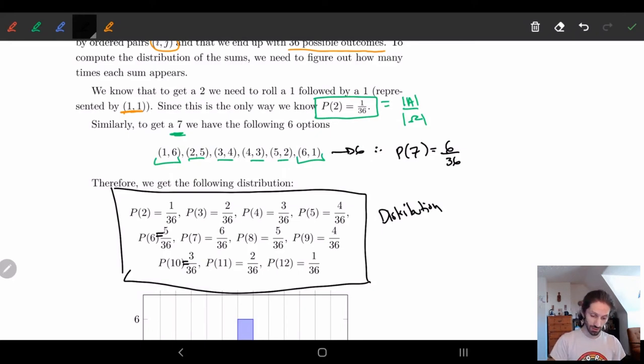Another way to do this is you don't have to list them one by one, you can also do them by a function. So I could say that P of i is equal to, and I'll have two different things. I'll either have i minus one over 36. And this works for two, three, four, five, six, seven. So where i is in two until seven.